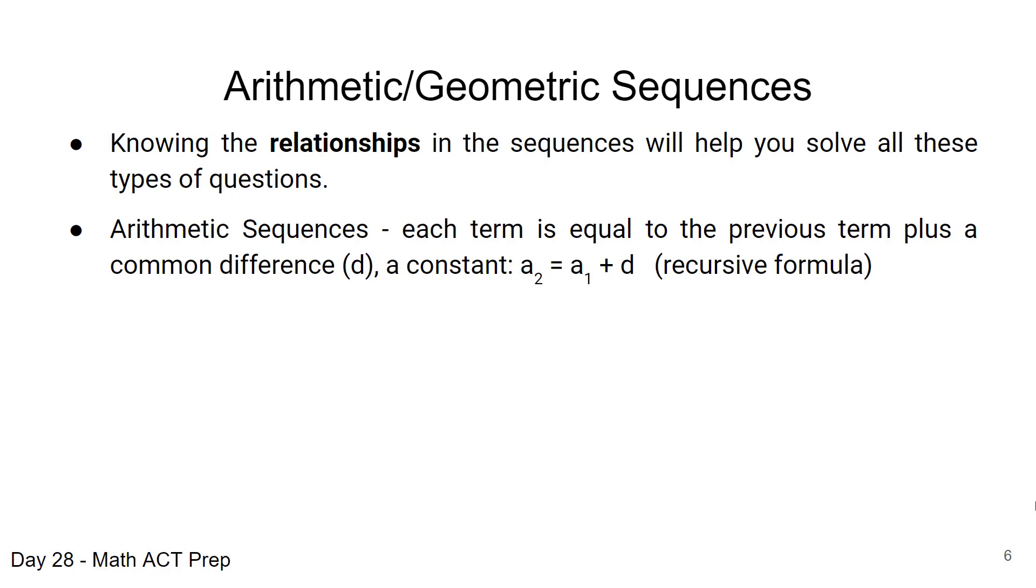That just means you find the next term by taking the previous term and adding the common difference to it. We can do that if we're looking for earlier terms like maybe the fifth or the sixth term because we can add those, but when we have to find the 500th term it's going to be harder to use the recursive formula if you're only given like the first five terms.